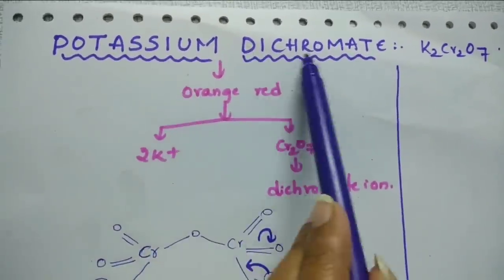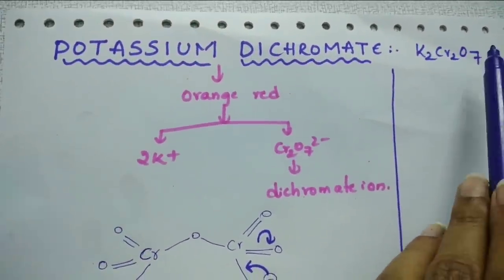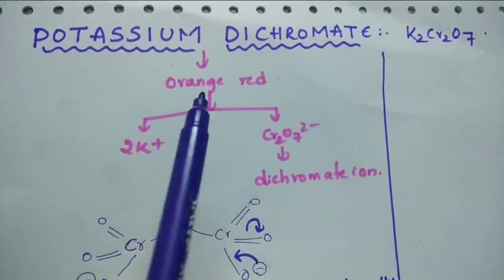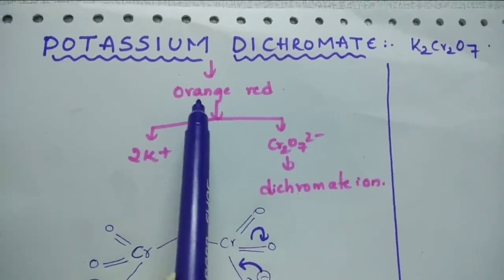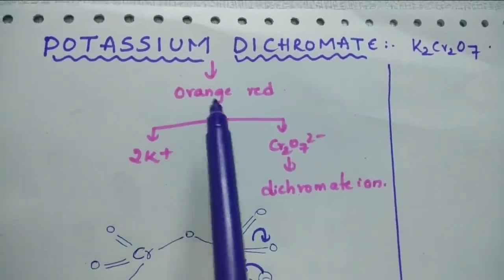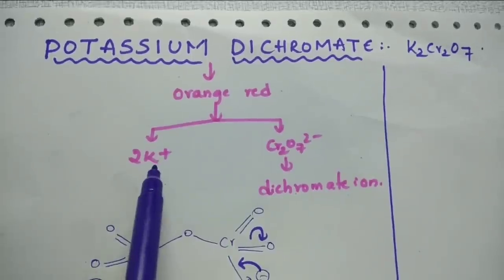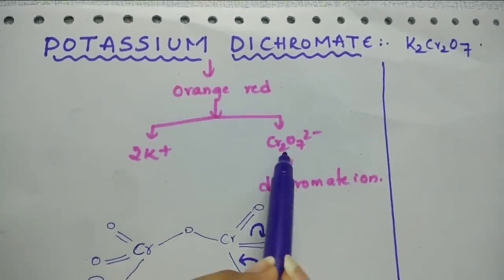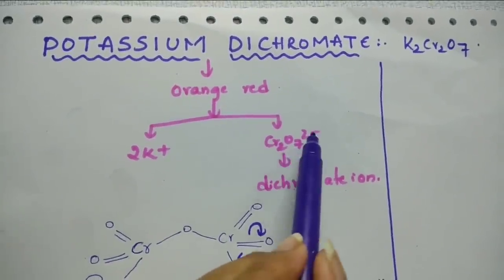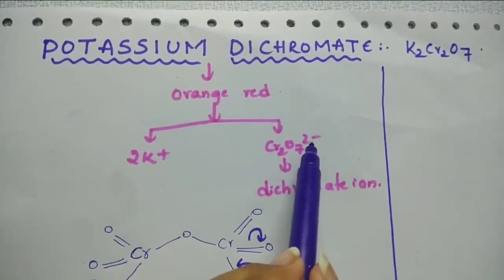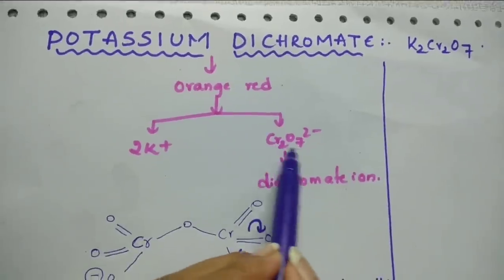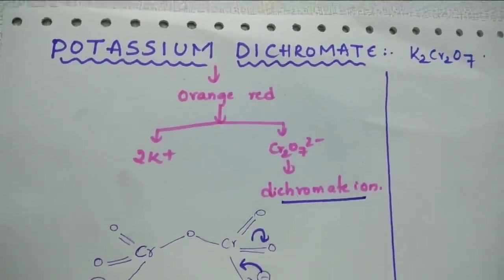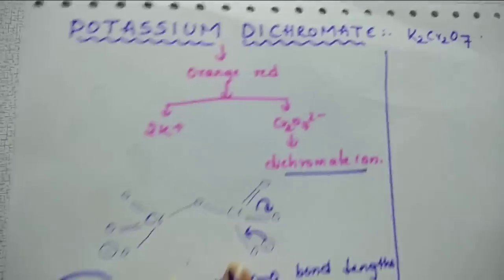Potassium dichromate formula is K₂Cr₂O₇. It is an ionic compound and which is in orange-red color, which dissociates into K⁺ ions and Cr₂O₇²⁻ ion. The Cr₂O₇²⁻ ion is the dichromate ion.